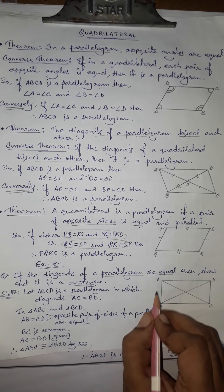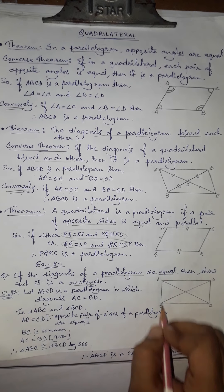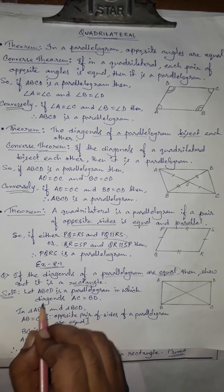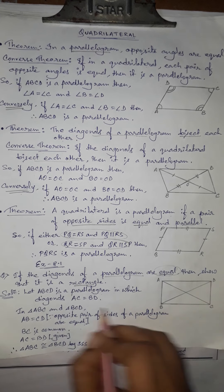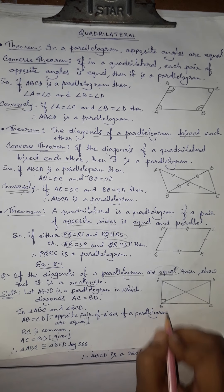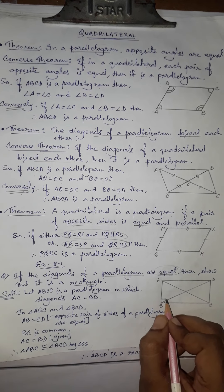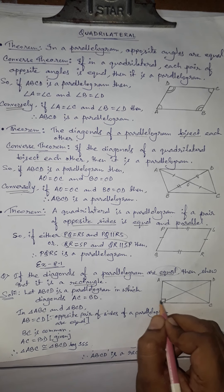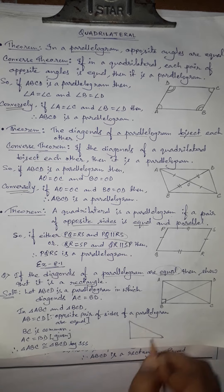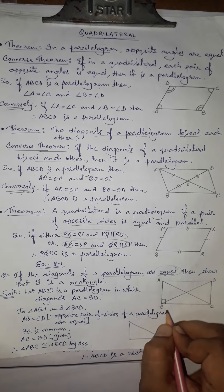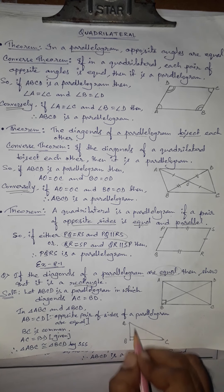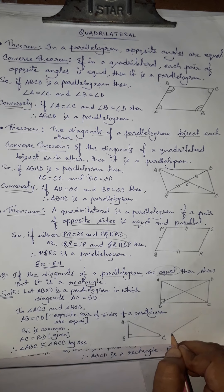Let ABCD be a parallelogram where diagonals AC equals BD. We aim to show angle B is 90 degrees, since that would prove ABCD is a rectangle. Angle B is part of triangle ABC. To prove one angle as 90 degrees we need a congruence, so we consider another triangle BCD and prove triangles ABC and BCD are congruent.